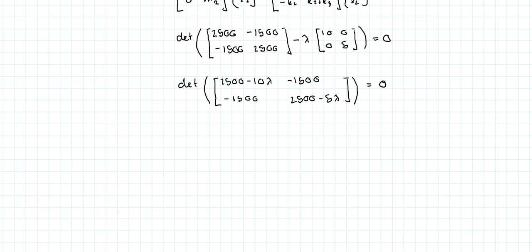Now the determinant of a 2 by 2 matrix is simply the product of the first diagonal minus the product of the second diagonal elements. We get 2500 minus 10 times lambda times 2500 minus 5 lambda minus 1500 squared is equal to 0. That gives us 50 times lambda squared minus 37,500 lambda plus 4 times 10 to the 6th equals 0.